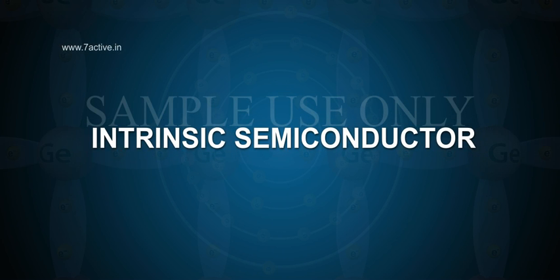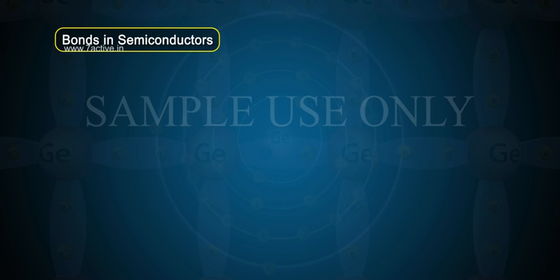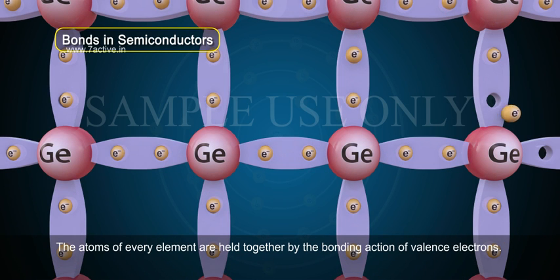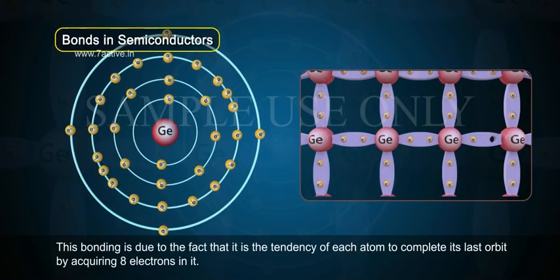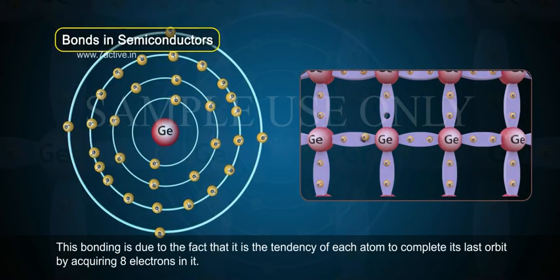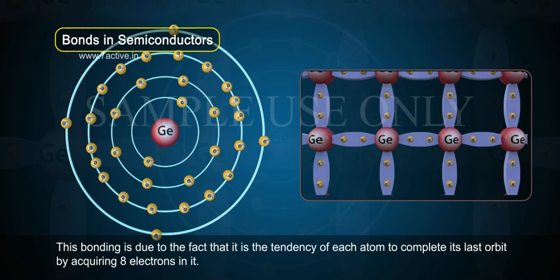Intrinsic Semiconductor Bonds in Semiconductors. The atoms of every element are held together by the bonding action of valence electrons. This bonding is due to the fact that it is the tendency of each atom to complete its last orbit by acquiring 8 electrons in it.